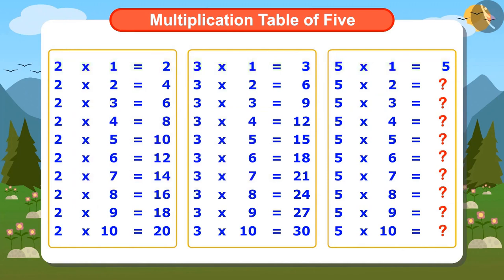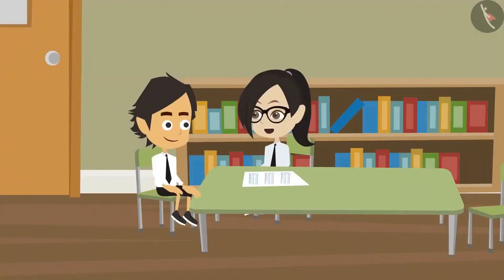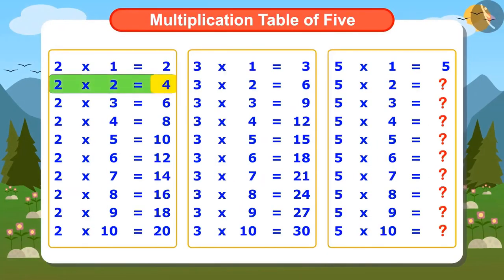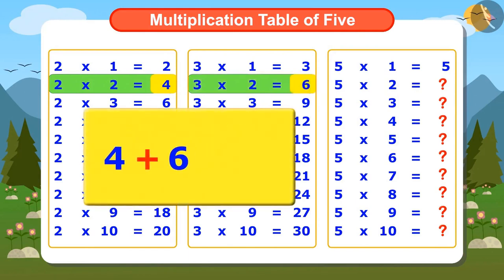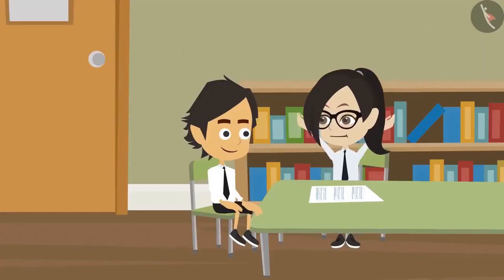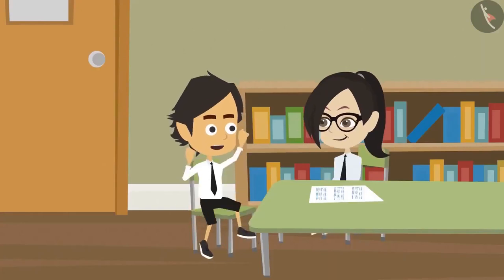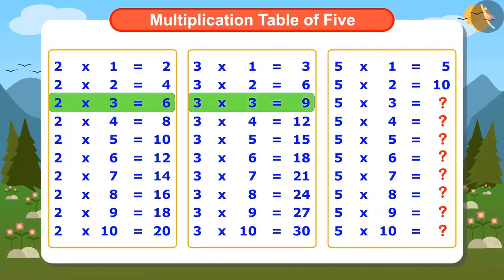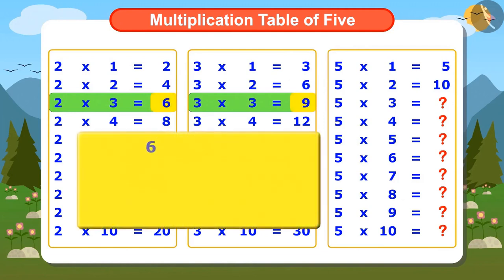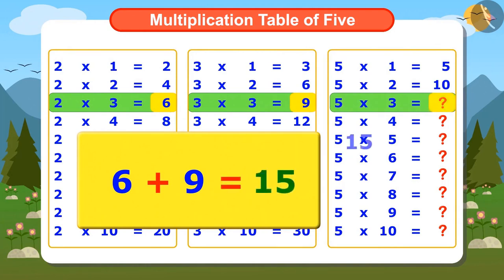We can find the next number exactly like this. 2 multiplied by 2 is 4 and 3 multiplied by 2 is 6. If 4 and 6 are added, the answer will be 10. This means 5 multiplied by 2 will be 10. Then we can find the third number in the multiplication table of 5 by adding the third numbers 6 and 9 in the multiplication tables of 2 and 3, which will be 15.